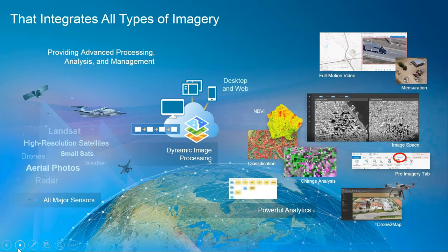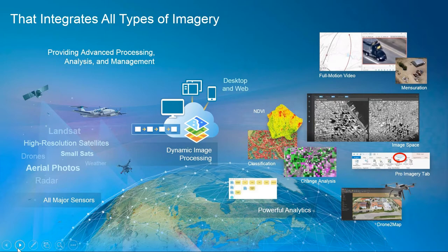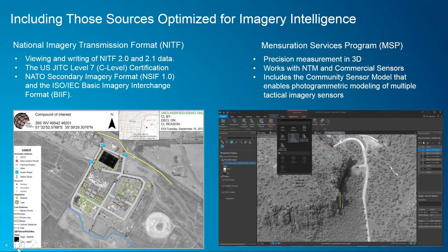Esri has really excelled at bringing in just about any type of raster and point cloud data. This includes imagery from multiple satellite, aerial, and drone sources. We can also bring in full-motion video, work with point clouds and do feature extraction from LiDAR systems like those found on the Buckeye program. For the U.S. and close allies, one of the key sources is built around the NITF — the National Imagery and Transmission Format. With ArcGIS, we are fully certified to NITF 2.1 standards up to level 7. We also support the NATO standard NSIF.